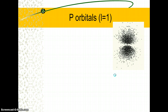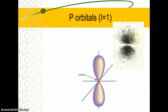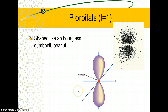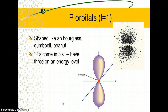For other electrons, the freeze-frame dot pattern gives a different shape. There's a node in the middle — a region where the electron just was never found. This gives an hourglass or dumbbell shape. These are called p-orbitals — you can remember it as a peanut shape. Whenever we have p-orbitals, they always come in threes. If there are p-orbitals on an energy level, there will always be three of them — and that's important to remember.